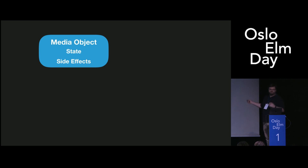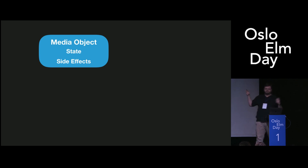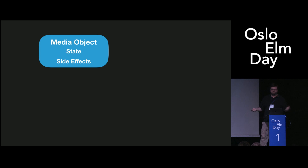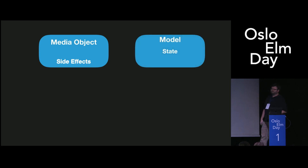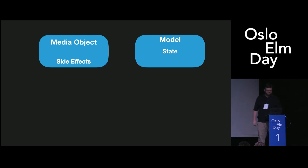In JavaScript and in the HTML5 API, we have an audio or video object, and it has state, and it controls side effects: play, pause, seek, change the volume. And we don't have objects in Elm. So how do we deal with this? The first thing is obvious — we can move our state into the model. But we still have these side effects to deal with. How do we deal with playing and pausing and the fact that this changes?